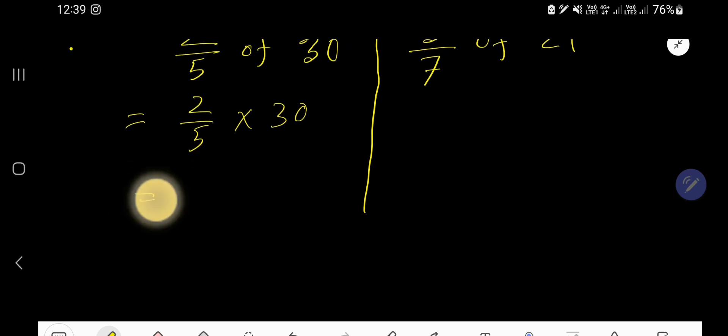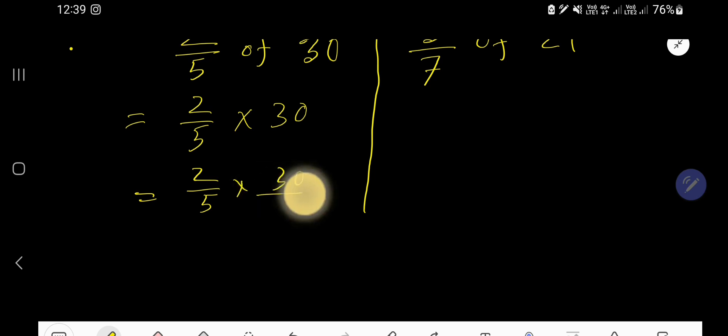Look, 30 is a whole number. So you can easily change this whole number as a fraction taking 1 as a denominator. Now you need to multiply these two fractions.